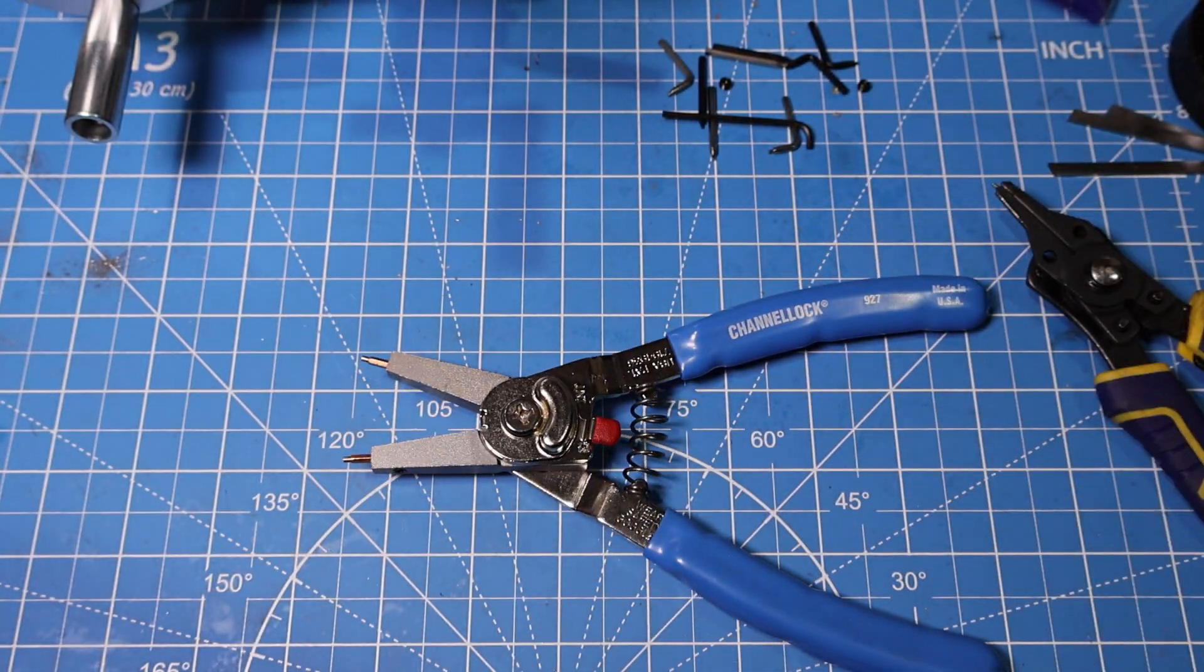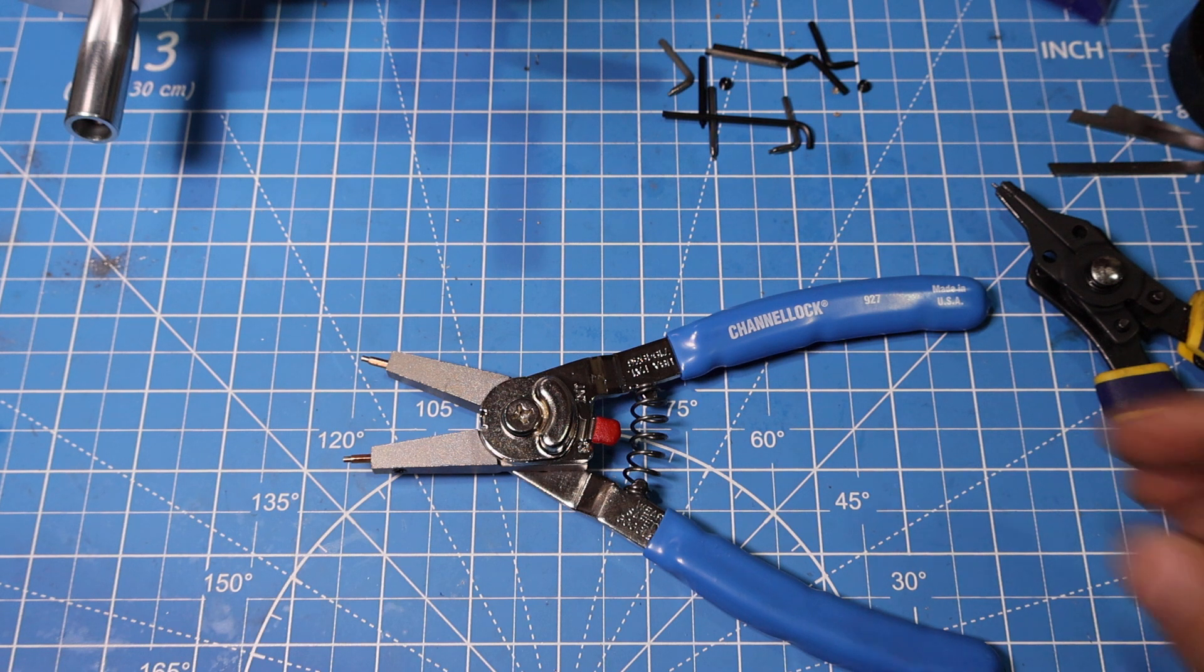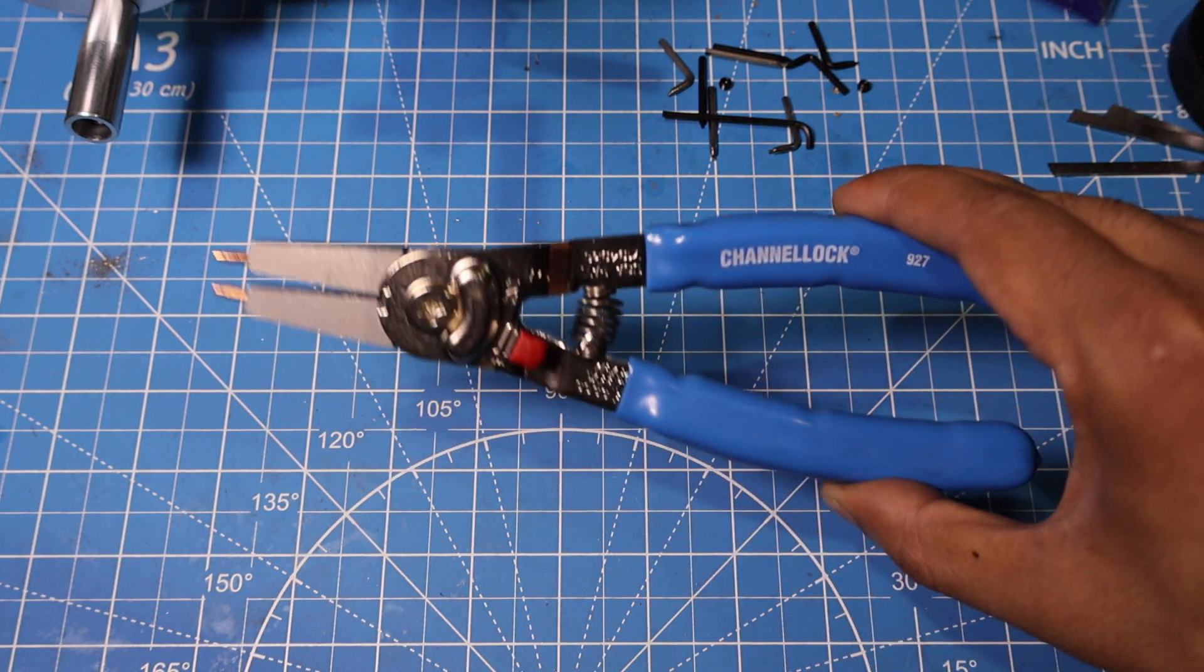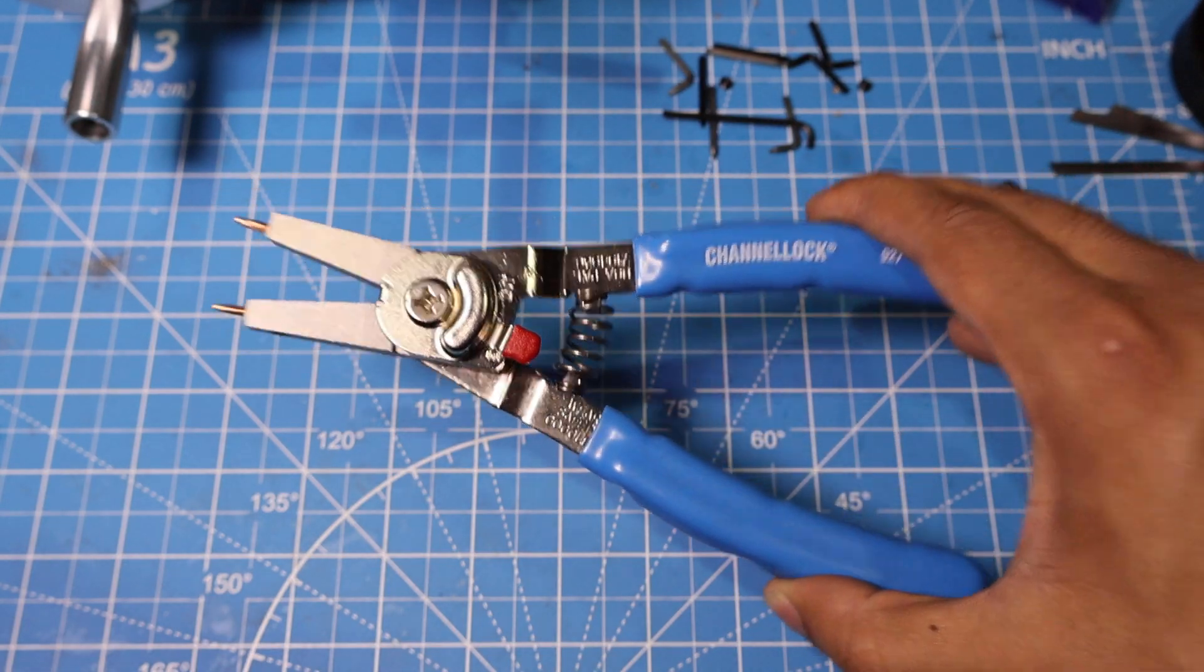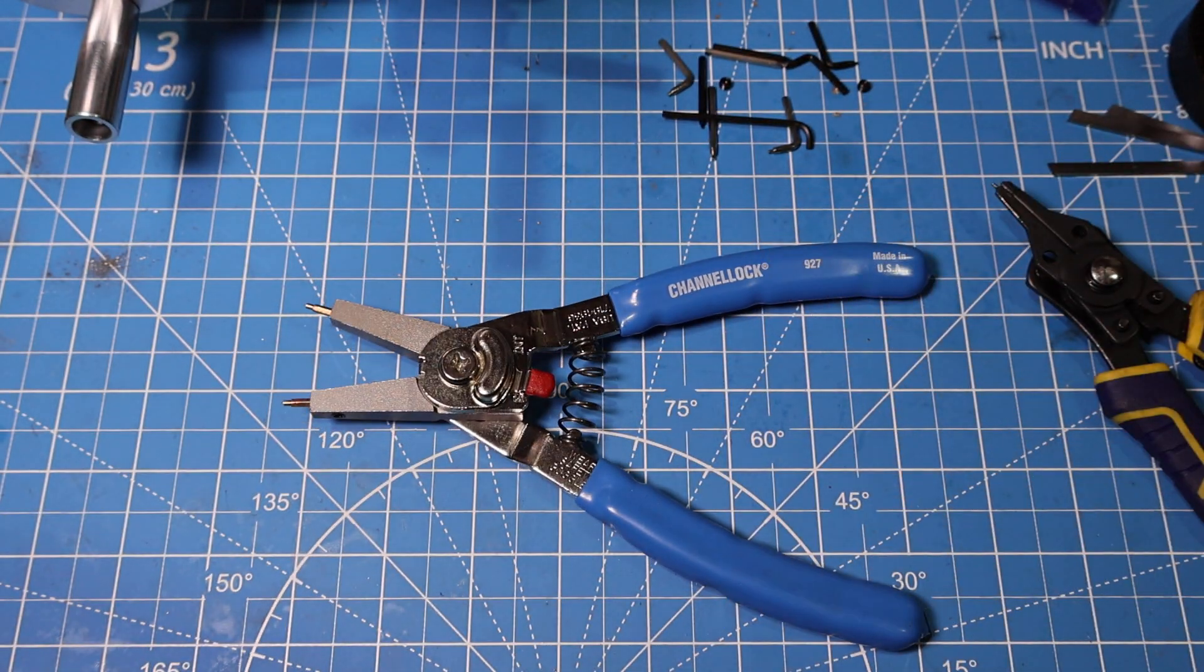If you guys have any recommendations of snap ring pliers, because I know that's not exactly the biggest tool, the most well-known tool, and if you work with these types of pliers, let me know. I'd love to hear more about them. Because so far I like these, but if there's anything better out there let me know because it's worth checking out.